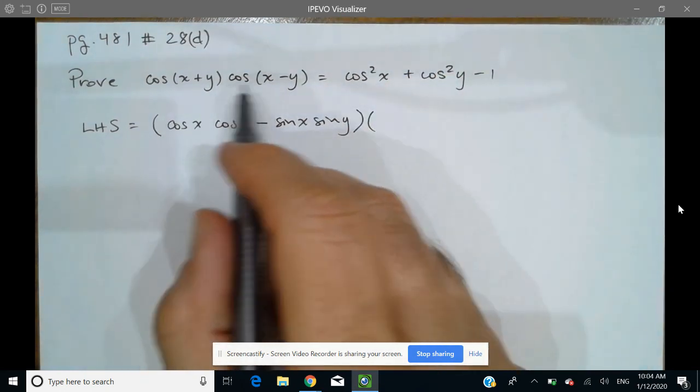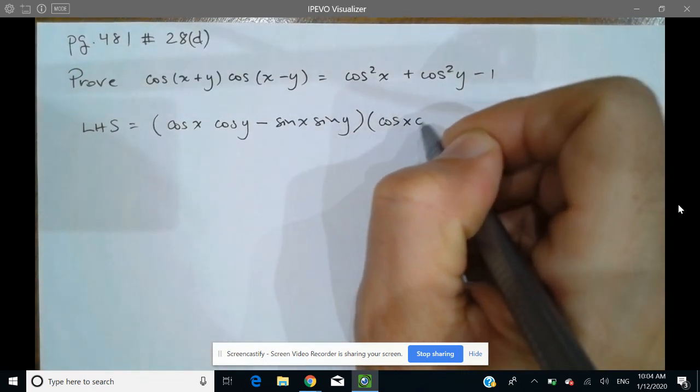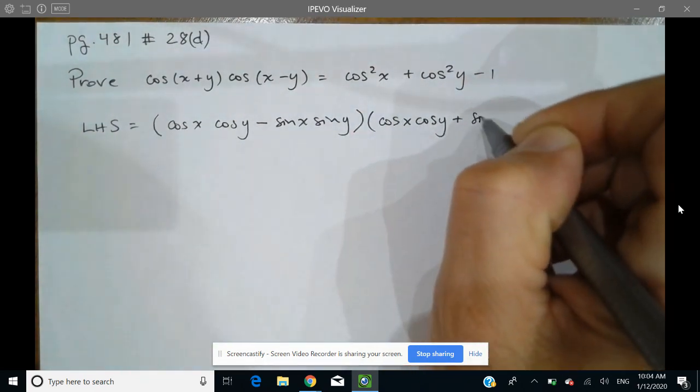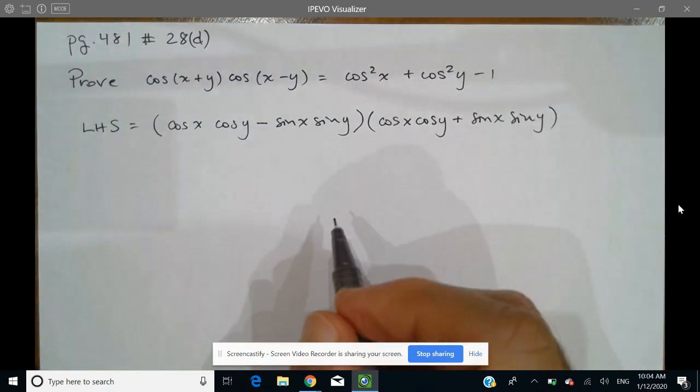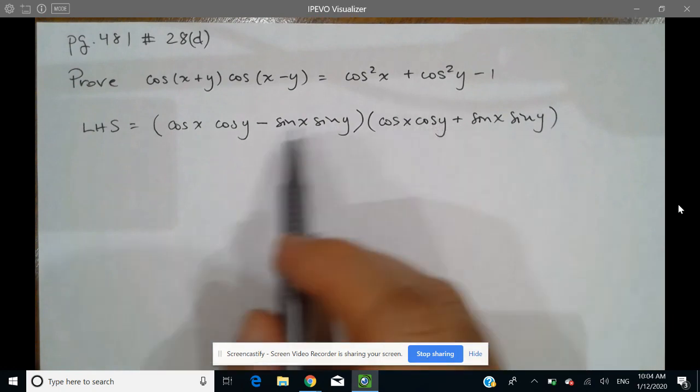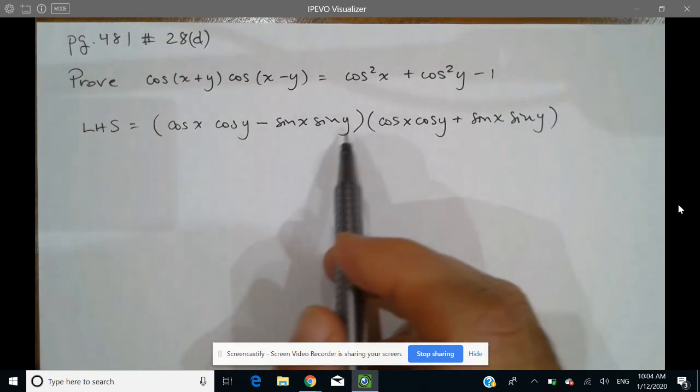And similarly for the other compound angle formula, it's going to be cos of the first, cos of the second, this time plus sine of the first times sine of the second. So not much to do within these two brackets. It looks like our only option is to distribute these two binomials.